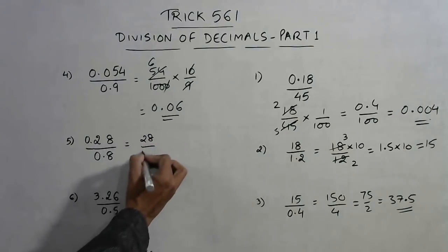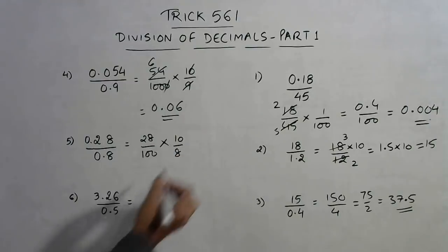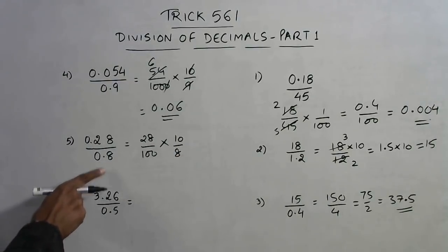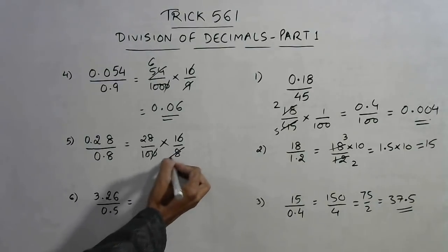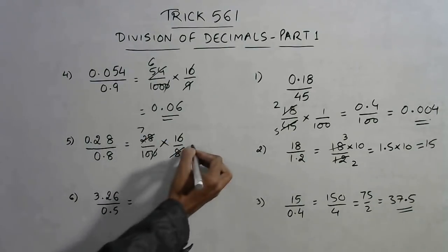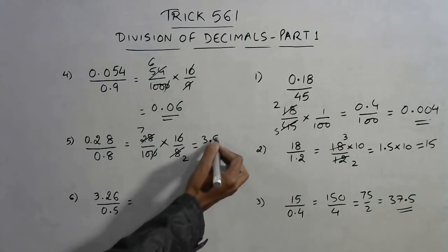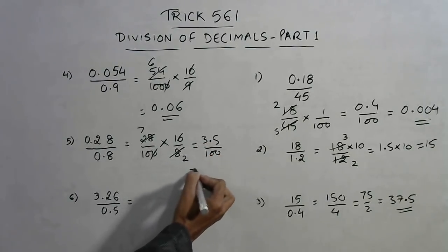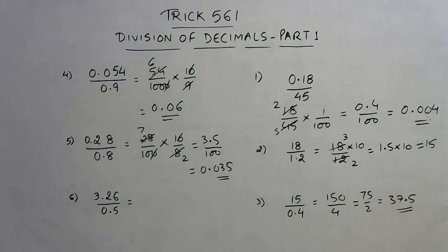Similarly, the next problem gives us 28/100 in the numerator and 10/8 in the denominator, which becomes 8/10 inverted to 10/8. The 10s cancel, leaving 4 times 2 are 4, and 7 times 2 are 14. So 7/2 is 3.5, and 3.5 divided by 100 gives the answer 0.035.